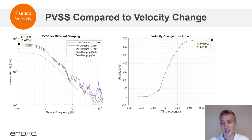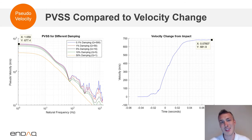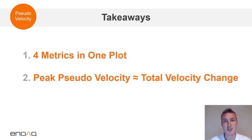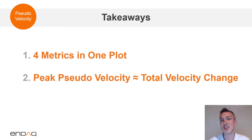When we talk about velocity in shock analysis, the area under the curve is really what's indicative of velocity change and energy. On the right is that velocity integration from the acceleration data. You see here that the motorcycle ended up traveling at 680 inches per second after the event. On the left-hand side, you see the pseudo velocity calculations for different damping coefficients. A system with a different damping coefficient will dampen that input, giving it a less severe response. But with less and less damping, you see that peak pseudo velocity plateau matches pretty closely with the total velocity change from the input. So a key takeaway from the pseudo-velocity shock spectrum is that you get four metrics in one plot, and that peak plateau — the peak pseudo velocity — roughly matches the total velocity change.